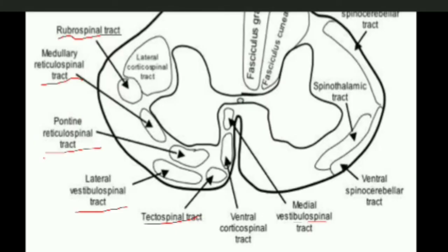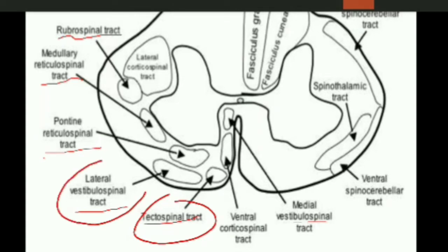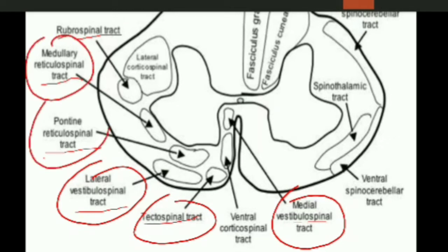This diagram shows the location of these tracts in the spinal cord. You can see here this is the tectospinal tract, this is vestibulospinal — lateral and medial vestibulospinal tract — reticulospinal, which has two further divisions: medullary and pontine reticulospinal tract, and rubrospinal tract.